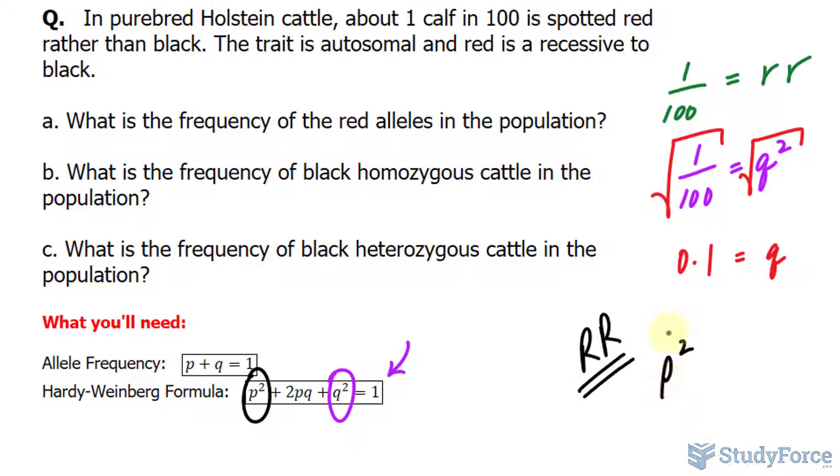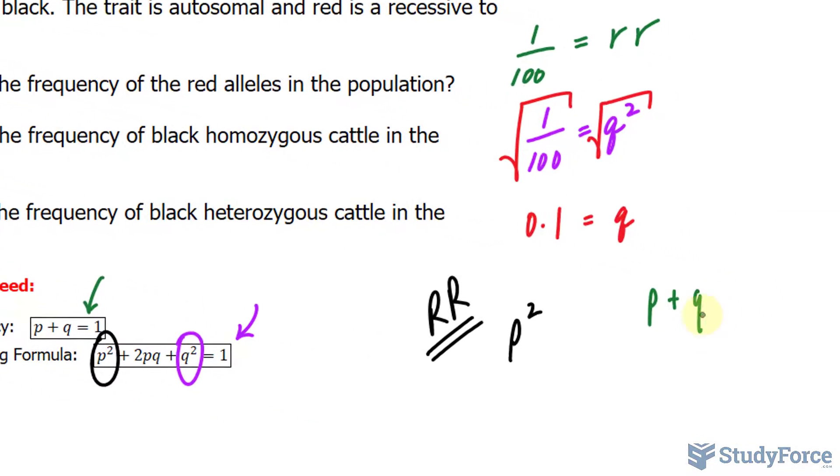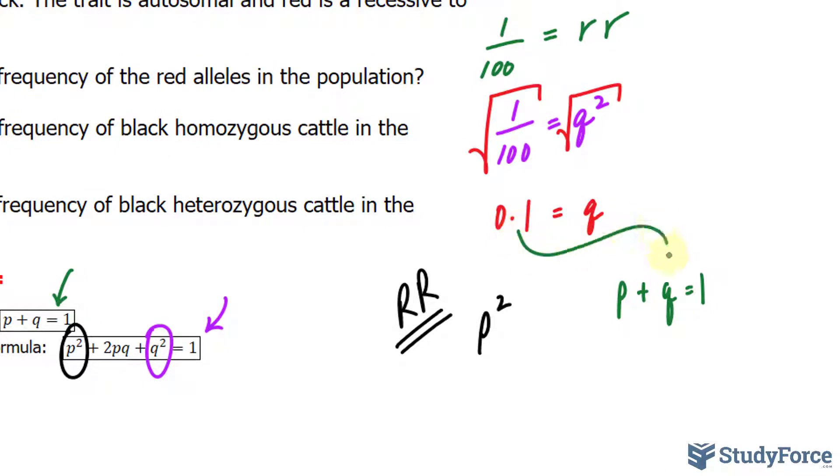To find p, I will use this formula, the first one, where I substitute the value that I found for q. So if p plus q is equal to 1, I'll substitute this value in for q, and I can solve for p really easily by moving that over, where I have p is equal to 1 minus 0.1, and that's 0.9.